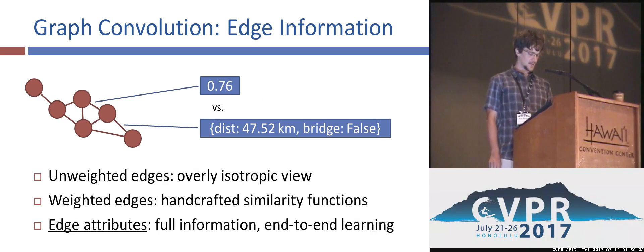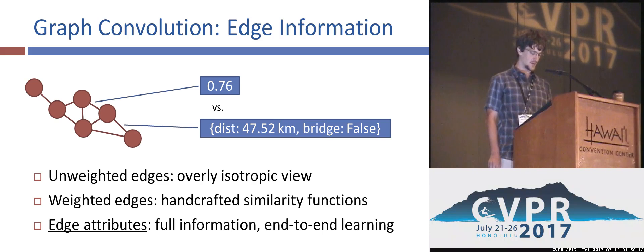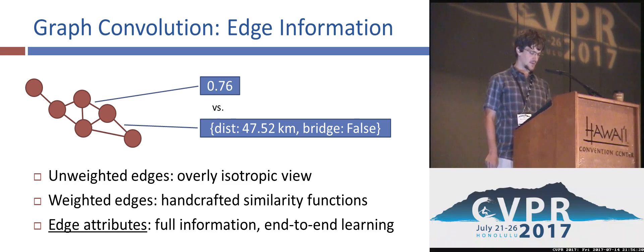Previous work has often dealt with unweighted graphs, which however provide an overly isotropic view of the local neighborhood and smooth information indiscriminately. In weighted graphs, weights are typically computed by handcrafted similarity kernels. We argue that it is better to provide edge attributes to the network directly and learn the influence end-to-end.